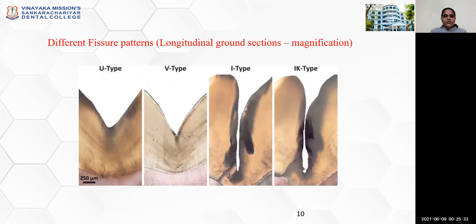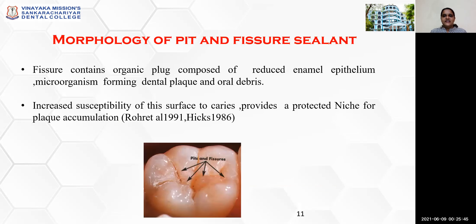These types of pit and fissure are viewed under longitudinal ground sections at 4X magnification. The types shown are U type, V type, I type, and IK type. The morphology of pit and fissure: the fissure contains organic plaque composed of reduced enamel epithelium, micro-organisms forming dental plaque, and oral debris.